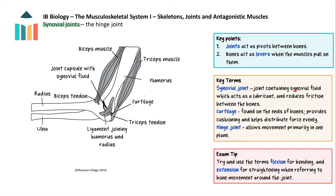The synovial fluid lubricates the joint and reduces friction between the bones. Cartilage covers the ends of the bone to provide cushioning and also helps distribute the force evenly across the bone. There are different types of synovial joints, each allowing specific movements. The elbow, which we have seen here with the biceps and triceps, moves primarily in one plane and is known as a hinge joint, like the knee.